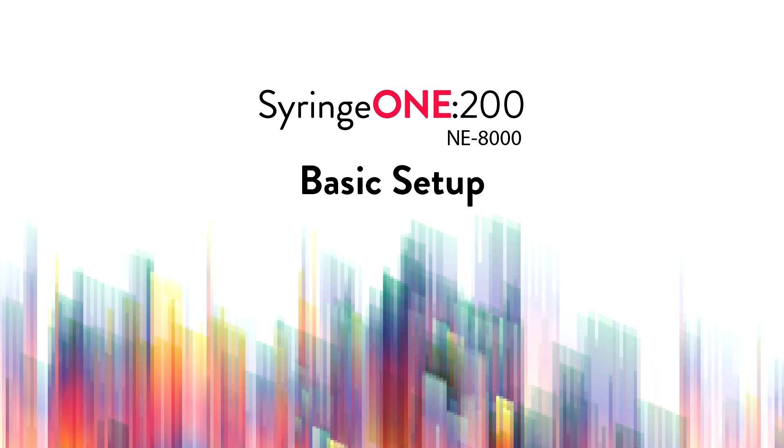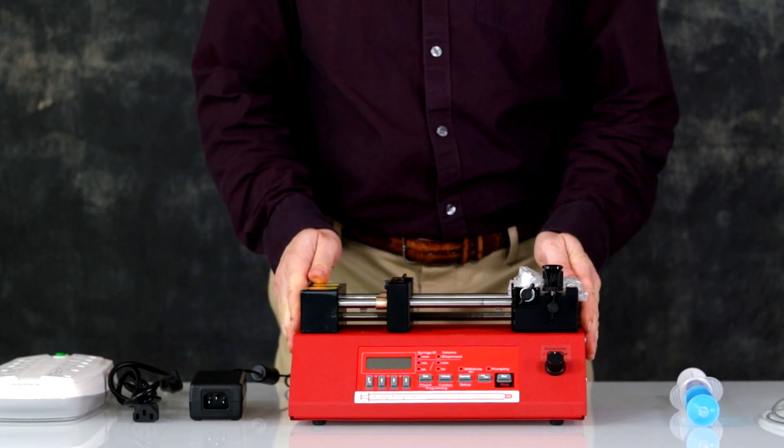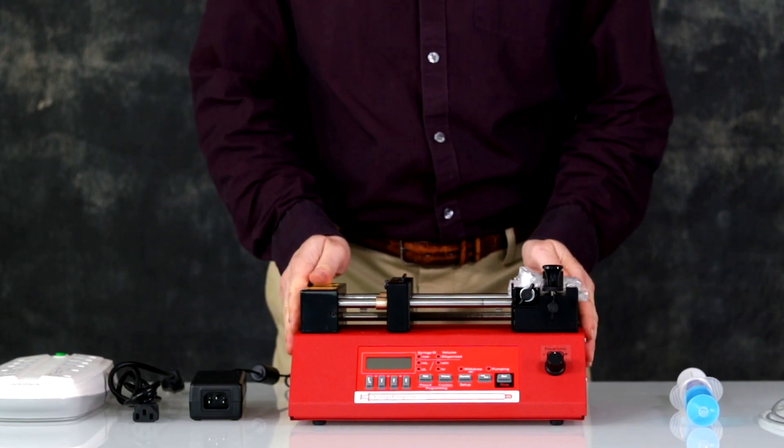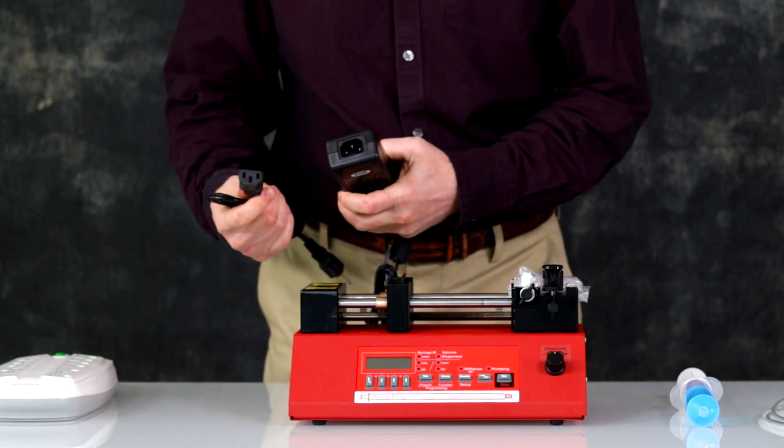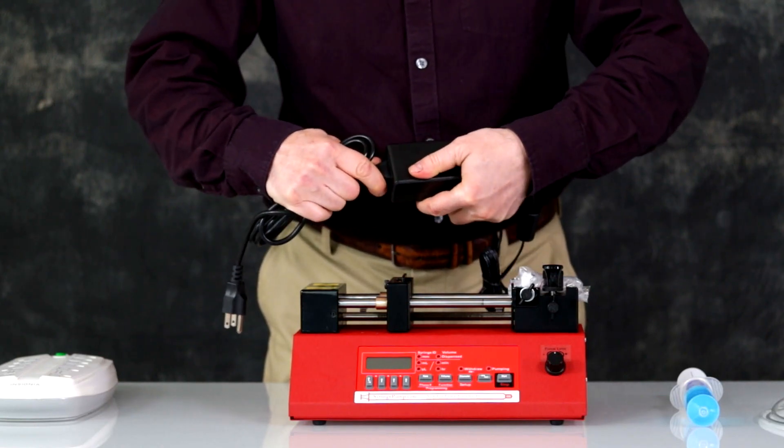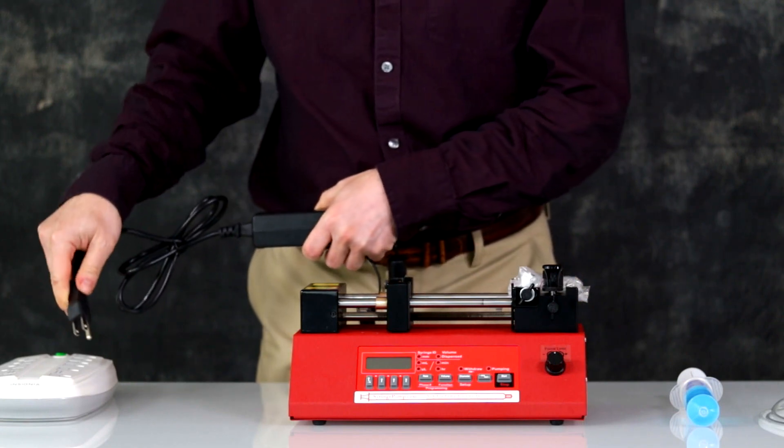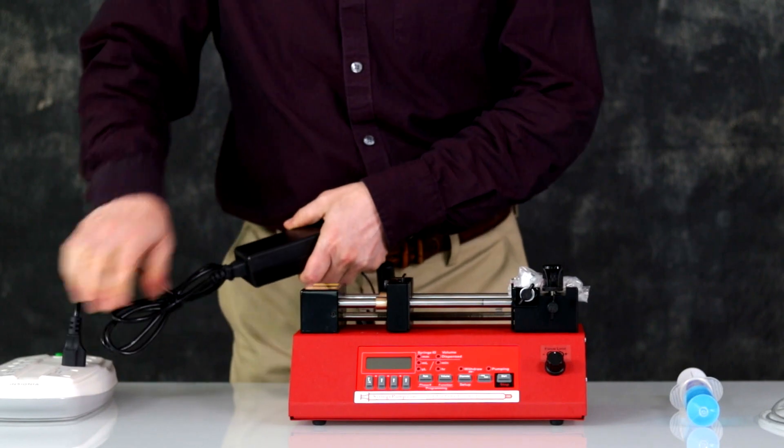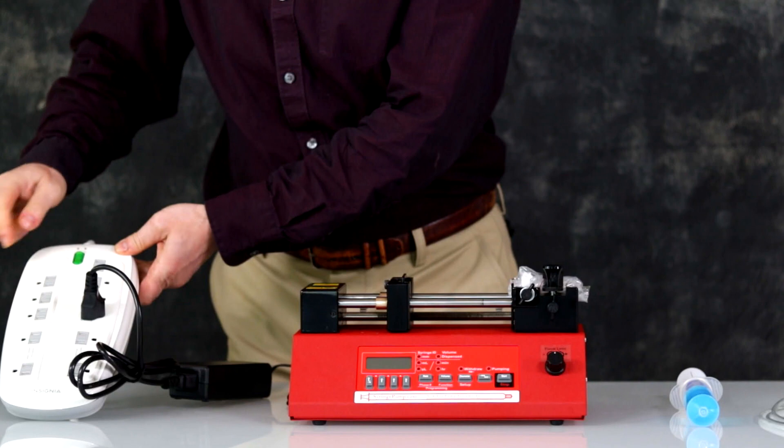NE-8000 basic setup for syringe pumps 1-200. Begin by plugging your power supply into wall power or a power strip. If you are using a power strip, make sure the power strip is turned on.